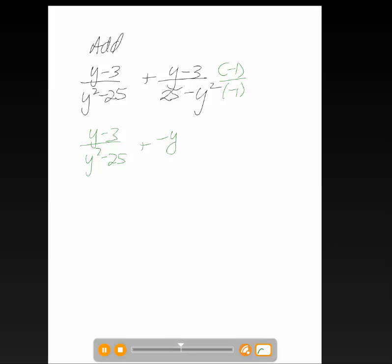then the numerator gives me a negative y and a positive 3, but the denominator is what's most important here. I get a negative 25, which I'll write second, and I get a positive y squared. Again, when we subtract in the opposite order, we actually have the opposite value.